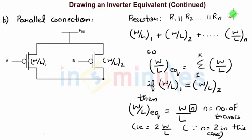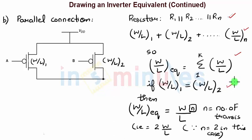So W/L equivalent equals W/L₁ + W/L₂ + … + W/Lₙ, which is nothing but the summation from 1 to k of all W/L values — it is the adding up of all W/L ratios when transistors are connected in parallel. On the left-hand side of the circuit, if W/L of 1 equals W/L of 2, meaning both are the same, then W/L equivalent is simply W/L + W/L.